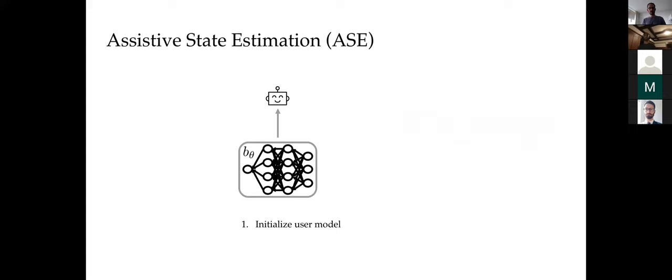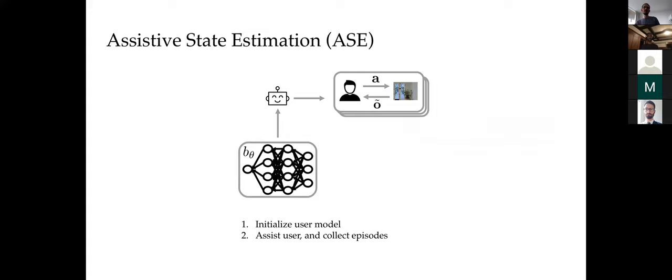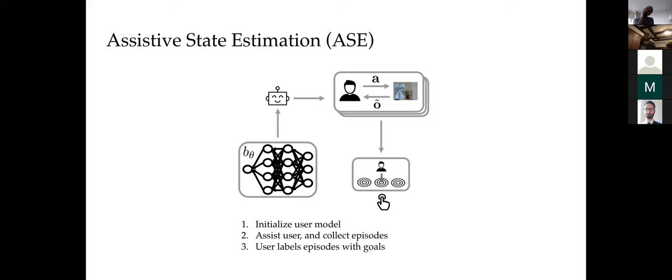We start with an initial model of the user's internal state estimation process that makes some assumptions about their systematic biases and perception difficulties. We use this initial model to assist the user and record the actions taken while they're being assisted. Because this is just an initial model, it may not be accurate, so the user may still take suboptimal actions. After episodes are done, we ask the user which tasks they were trying to perform, so we can compare their actions to the optimal actions for those tasks. This enables us to compute the optimal policy and fit a new user model that explains the gap between optimal and suboptimal actions.